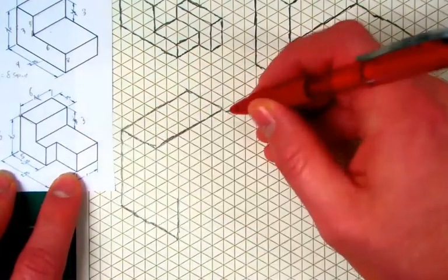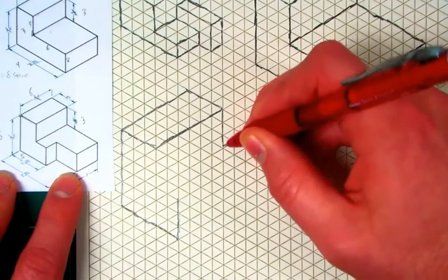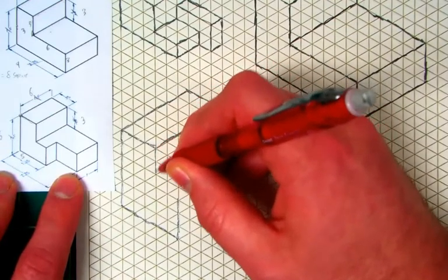And then we know it goes down 3. So 1, 2, 3. And we know it goes down 3. 1, 2, 3.